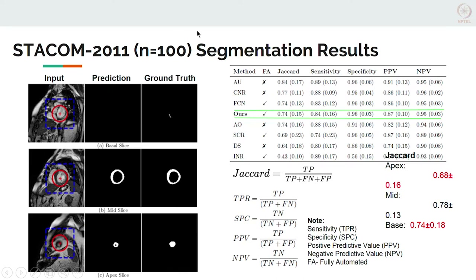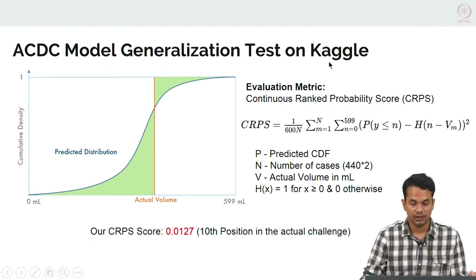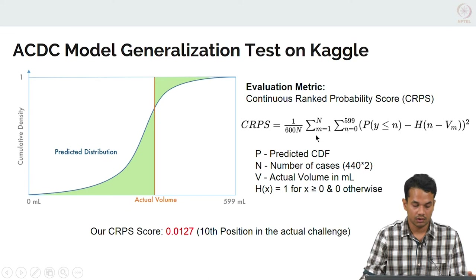In the STACM challenge we also achieved fairly competitive results; our method was fully automatic and on par with other techniques. The metric used was the Jaccard index, and we can clearly see that our model had slightly lower predictions for the apex and base slices, whereas in the mid-slice the predictions were really good. For the Kaggle dataset, we did not use any Kaggle training data; instead, we used our ACDC model trained on the ACDC dataset for directly testing on the Kaggle test set. They used a continuous rank probability score, and our score was around 0.0127, which gave us a position of tenth in the challenge.